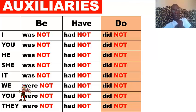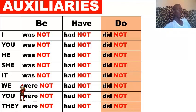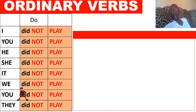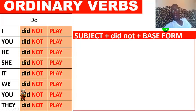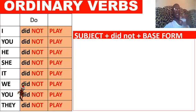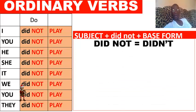For ordinary verbs — all verbs that are not auxiliaries — the negative form is: Subject + did not + base form. La forme de base, c'est l'infinitif sans 'to': to play → play, to go → go, to eat → eat. So: I did not play, you did not go, they did not come, we did not understand. Did not can also be contracted to didn't — the O is replaced by an apostrophe.